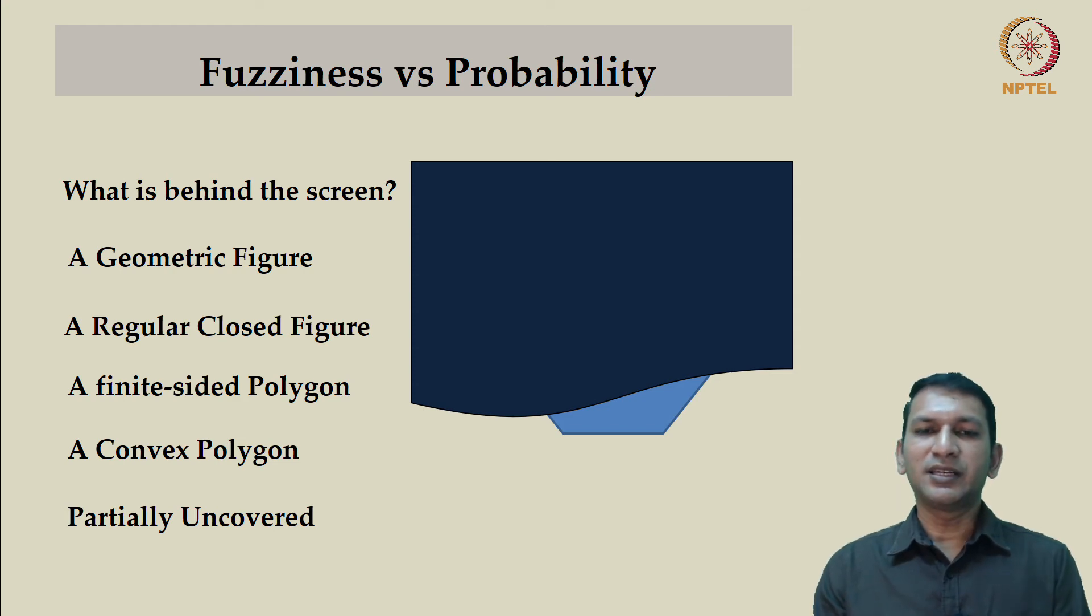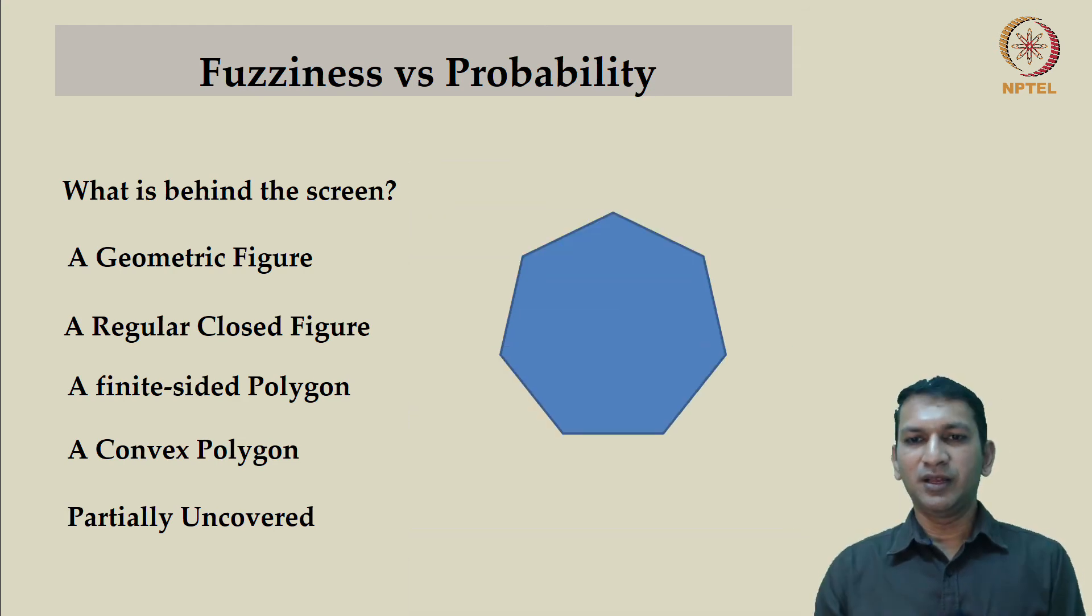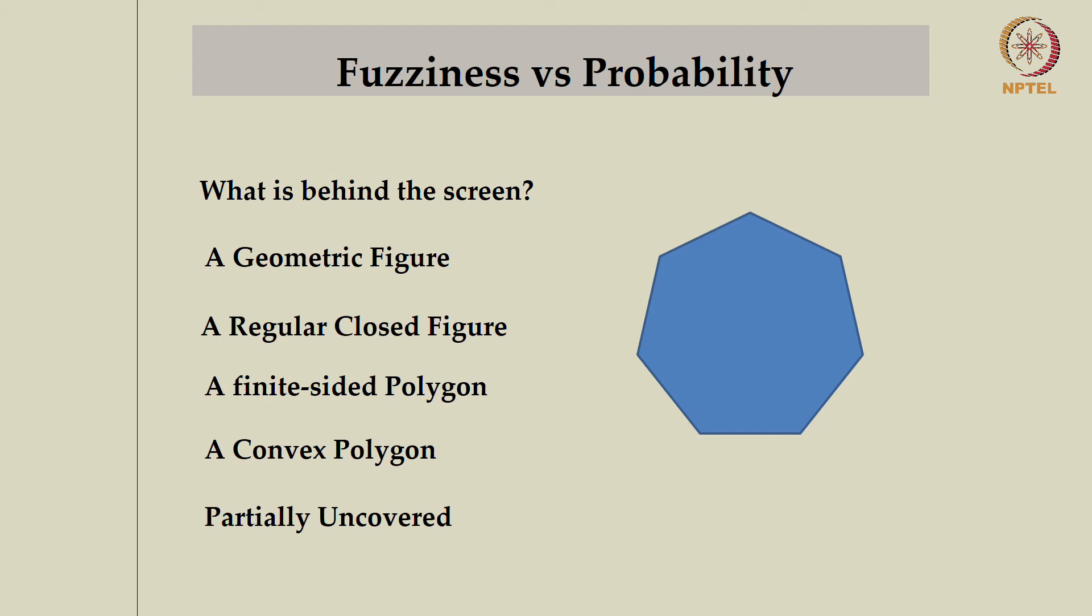Now, let's remove the screen to see what we have behind the screen. There is neither a hexagon nor a pentagon. But this does not discredit the procedure that we have followed. In essence, probability deals with randomness and it is a lack of information that leads us to play this guessing game. With more and more information coming our way, we are actually revising the probabilities. Note, once we are shown the object, we are not guessing anymore. We know clearly it is a finite-sided polygon with seven sides.